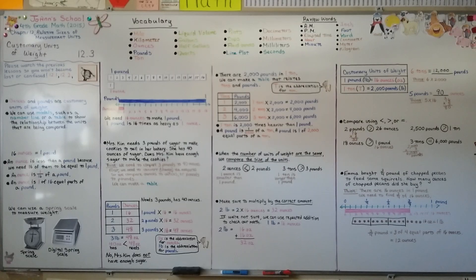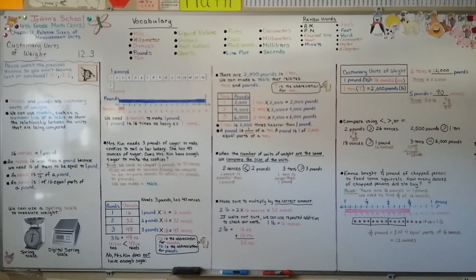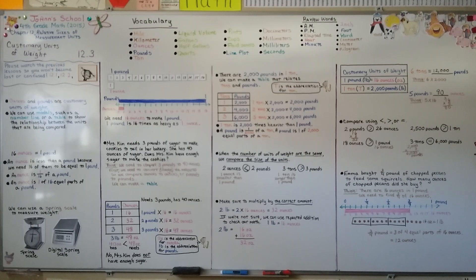Remember to multiply by the correct amount. There are 16 ounces in a pound and 2,000 pounds in a ton. Our next lesson, 12.4, will cover customary units of liquid volume — cups, pints, quarts, and gallons. Hope to see you there — bye!